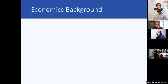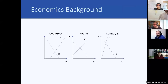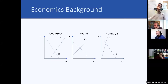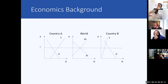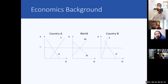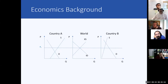Imagine you have a two-country world: on the left side country A, in the middle the world, and country B. The world market price comes from the world equilibrium. My first question: can someone tell me about the free trade situation in country A and country B?